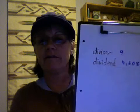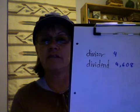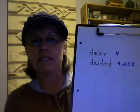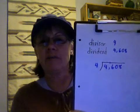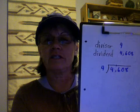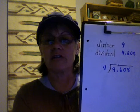For problem number 3, we will use a divisor of 4 once again and a dividend of 4,608. Correctly set up to solve, it would look like this. How many 4's are there in 4,608?